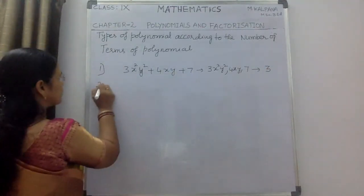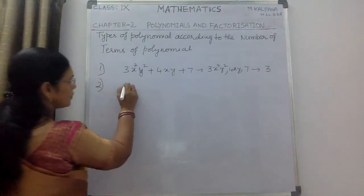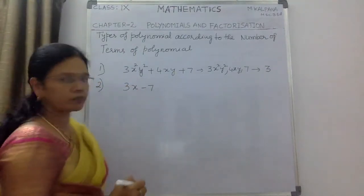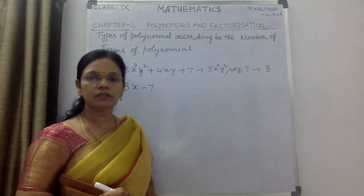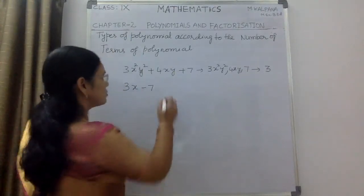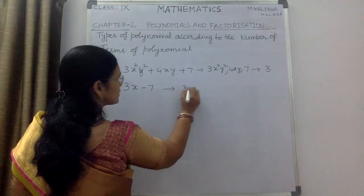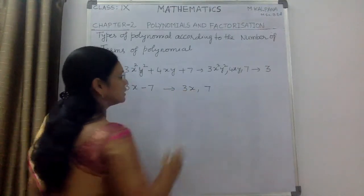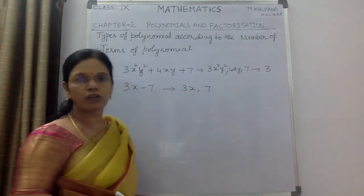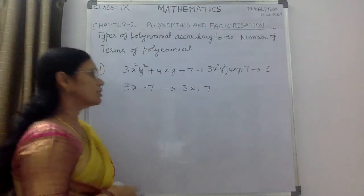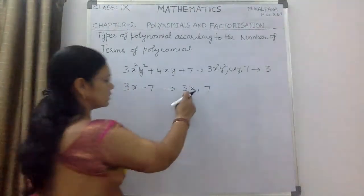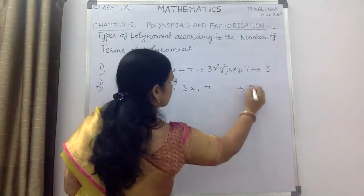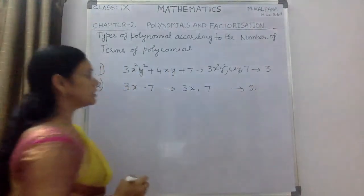I am going to take another example: 3x minus 7. Now tell me, what are the terms involved in it? So 3x and 7 are the terms of this particular polynomial. So in total, how many terms are there? The number of terms here are 2.